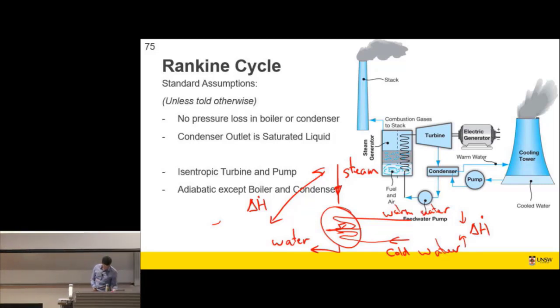What other assumptions would we make? Isentropic turbine and pump, unless you're told otherwise, and adiabatic except the boiler and condenser. So that would be a standard assumption that we would make. That the only places where heat is moved around are the boiler and the condenser.